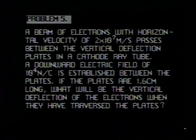Problem number five reads: A beam of electrons with horizontal velocity of 2 times 10 to the 7th meters per second passes between the vertical deflection plates in a cathode ray tube. A downward electric field of 10 to the 4th newtons per coulomb is established between the plates. If the plates are 1.6 centimeters long, what will be the vertical deflection of the electrons when they have traversed the plates?